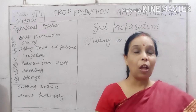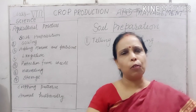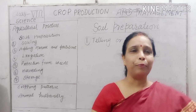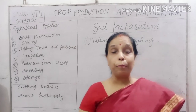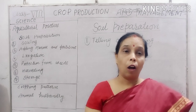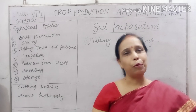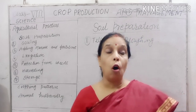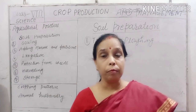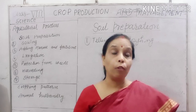When soil is turned over, nutrients that were settled at the bottom come up to the top layer. The top layer of soil is best for crop growth. Various useful microorganisms, insects, and earthworms can grow in the loose soil. It also provides space for air and water.